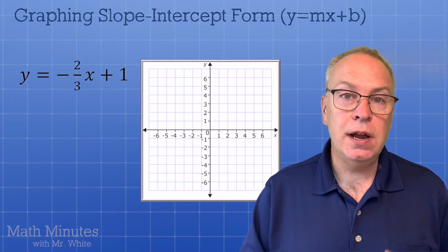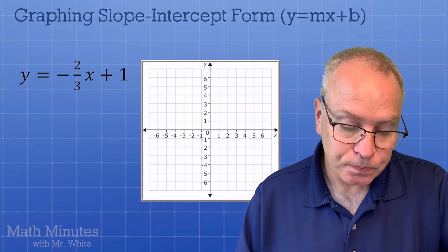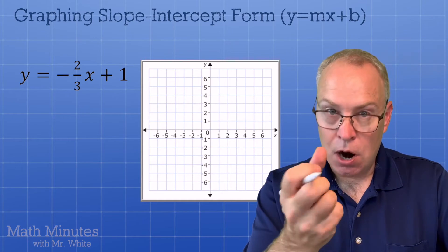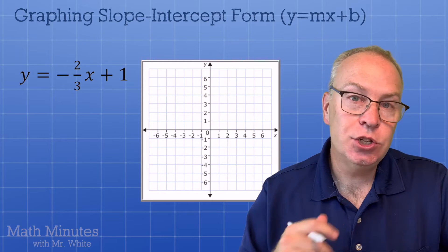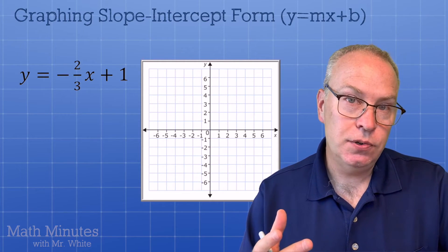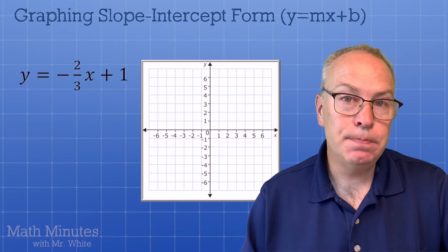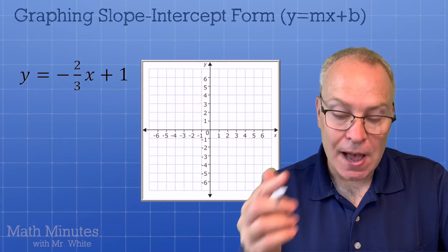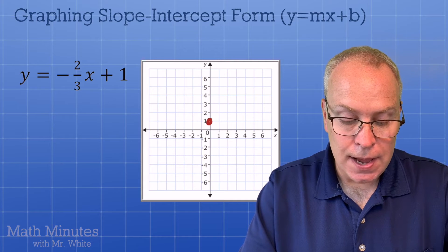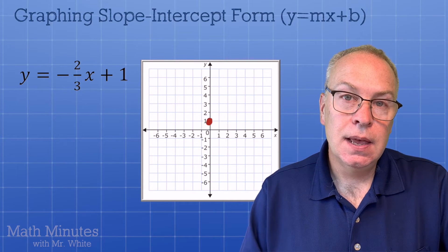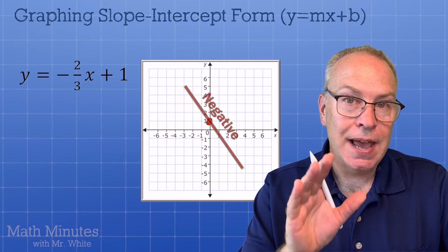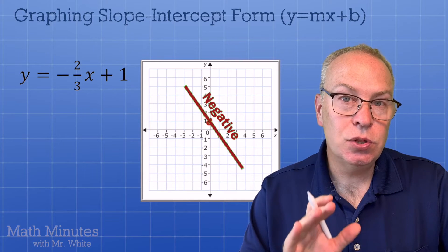Question number four here. Finally, we're going to look at something that has a negative slope. Once again, let's harvest out the information we need. The slope here is negative two-thirds. And then the b value, that y-intercept, is positive one. So find the y-axis and go up one and put a dot. Now, this time, remember, negative slope lines are down and to the right.